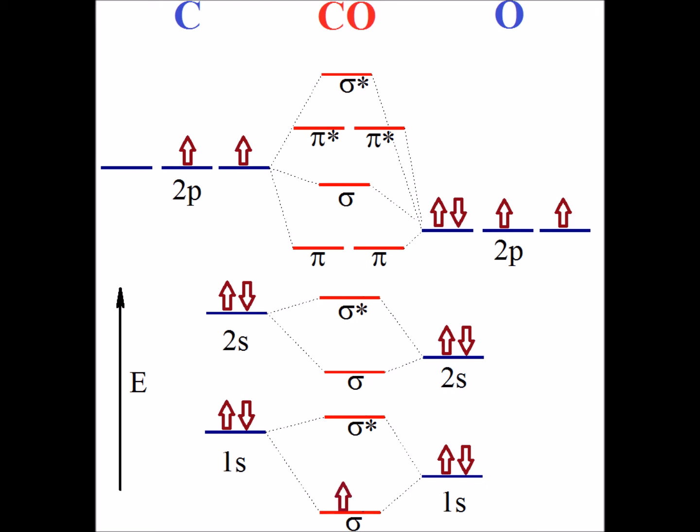We place the electrons in the molecular orbitals, shown in red, using the aufbau principle, starting at the bottom and working our way up from lowest to highest energy. And also using Hund's rule, when we have degenerate orbitals, such as the pi molecular orbitals here, we first half fill each orbital before fully filling it.